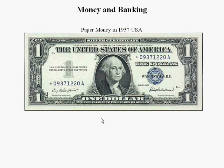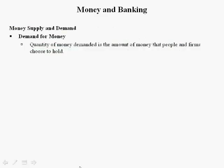If you compare that 1957 bill to one in your wallet today, you're not going to see gold or silver on the paper — but you will see 'In God We Trust.' So we went from the gold standard. All goods and services have supply and demand, and money is no different.